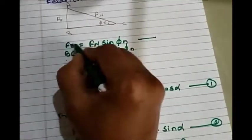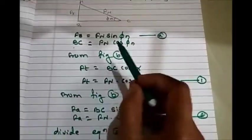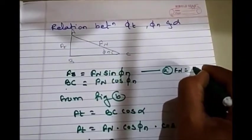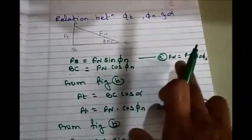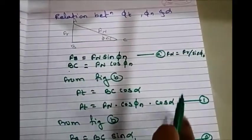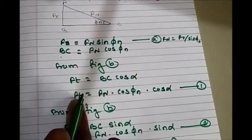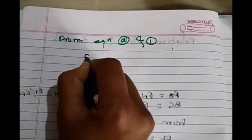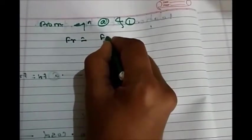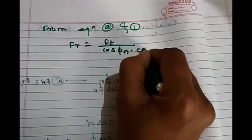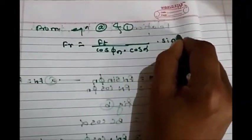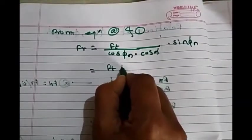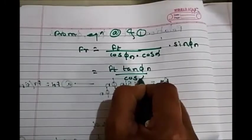Now from equation A, FR equals FN × sin(φN), so FN equals FR divided by sin(φN). Substituting this value of FN into equation 1 — FT equals FN × cos(φN) × cos(α) — we get: FT equals (FR / sin(φN)) × cos(φN) × cos(α). Rearranging, FR/FT equals sin(φN)/cos(φN) divided by cos(α), which gives tan(φN) divided by cos(α).